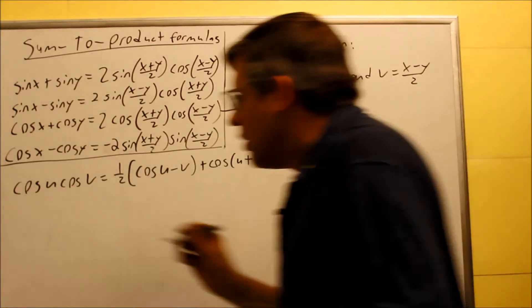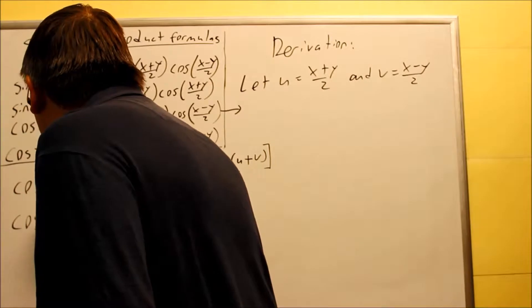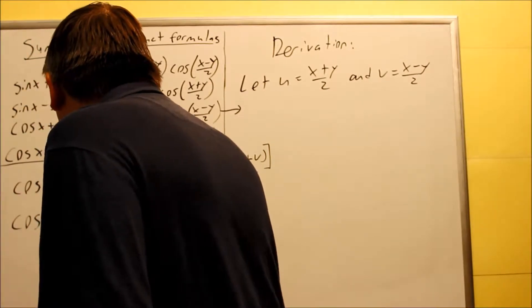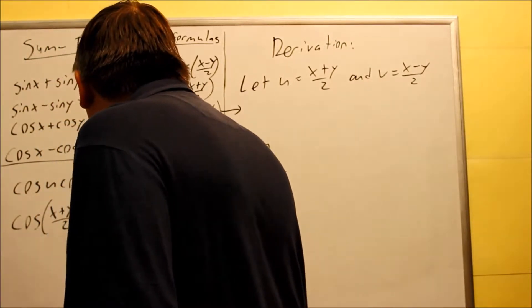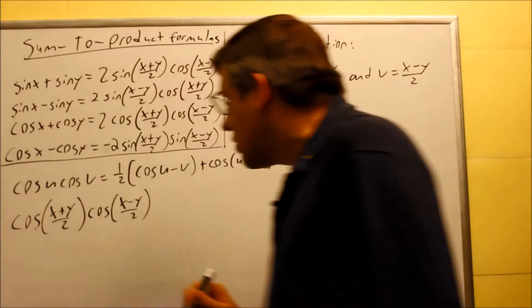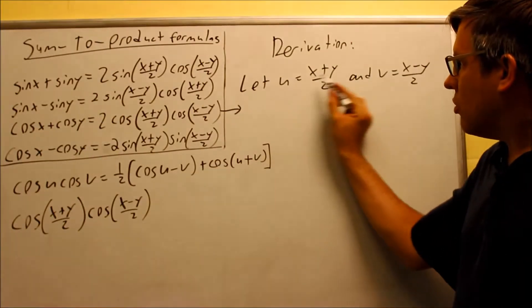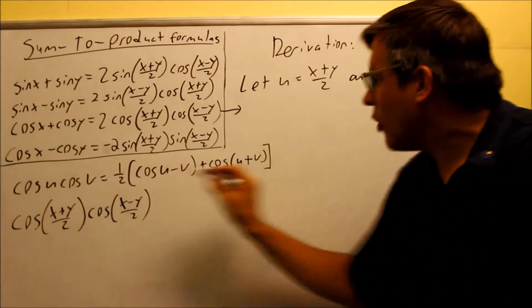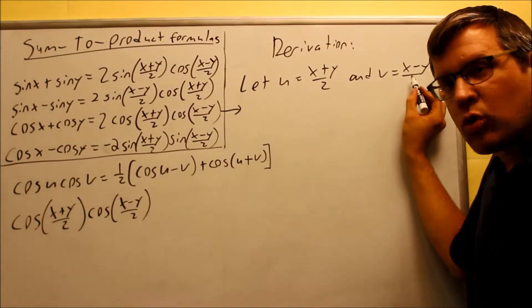Okay, so we do that. I'm going to do cosine of x plus y over 2, cosine x minus y over 2. All I did was I just replaced the u with x plus y over 2, and the v, I replaced it with x minus y over 2.